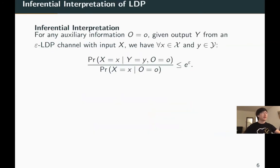Let's consider the inferential interpretation of LDP. Given any auxiliary information O, if a user wants to guess whether the input is x or not based on the output Y of an LDP channel W, his success probability should not increase by a factor more than e to the epsilon compared to someone who only has access to O. For LDP, this should hold for any element in the alphabet. However, in some applications, not all elements are equally sensitive.